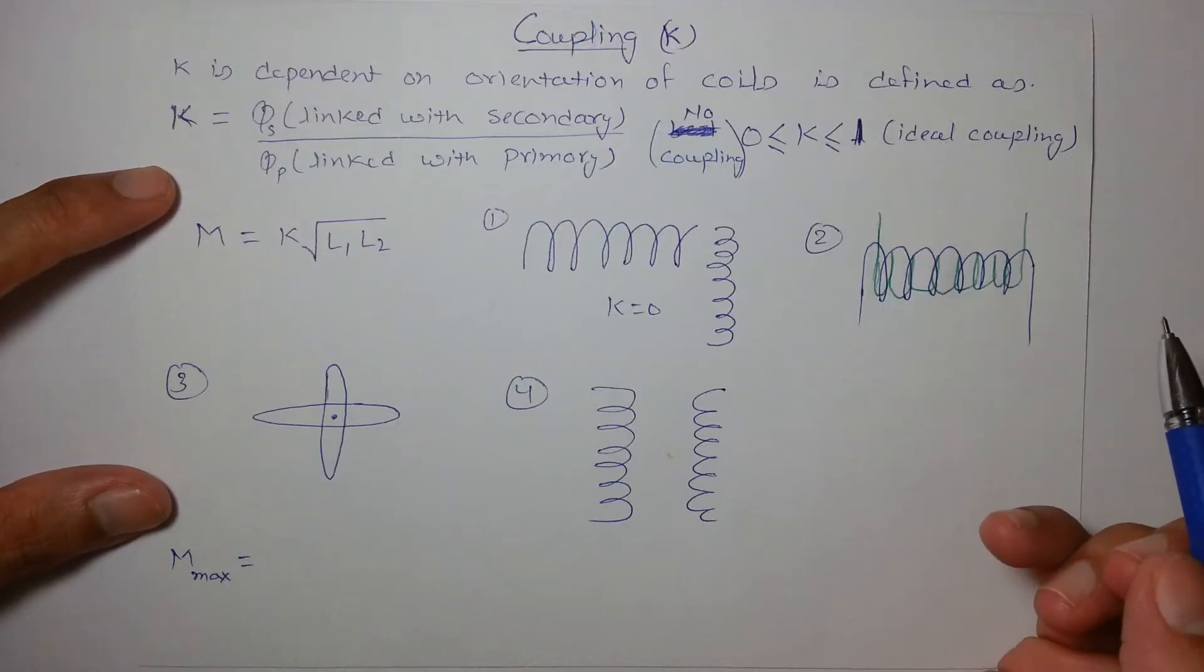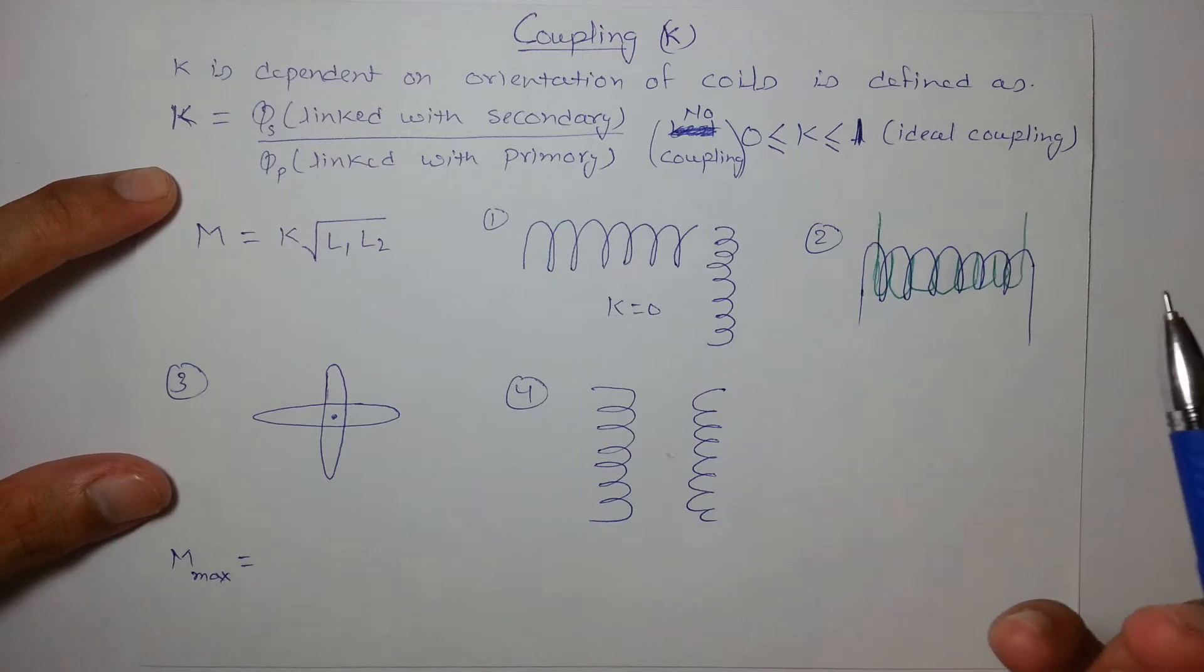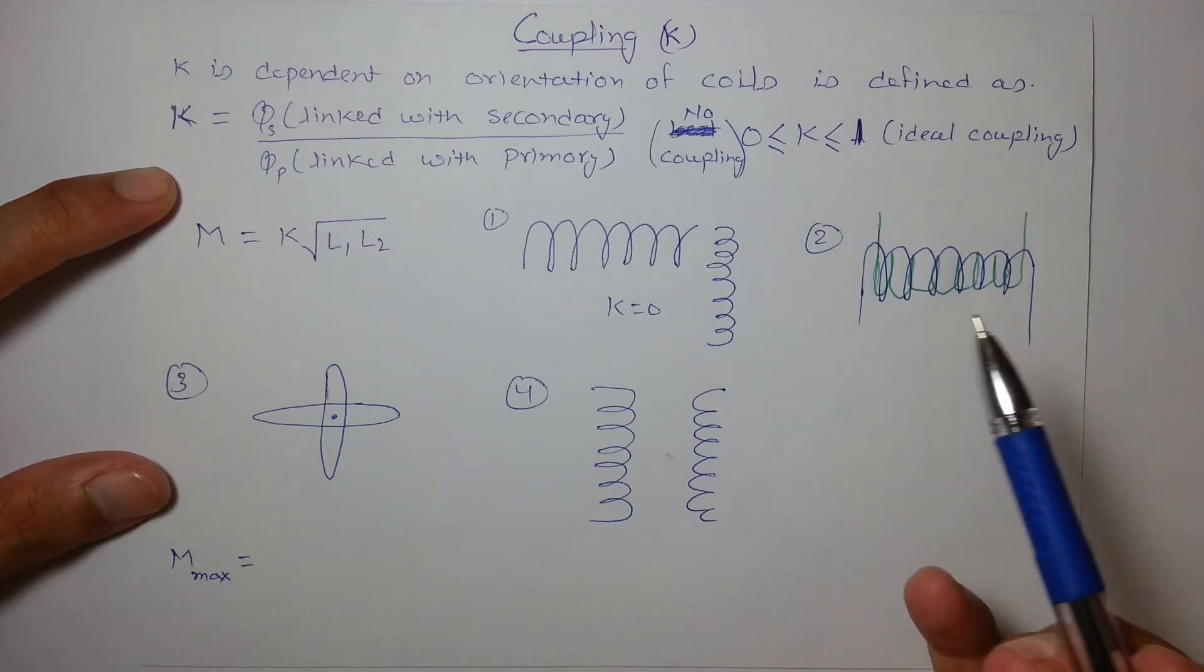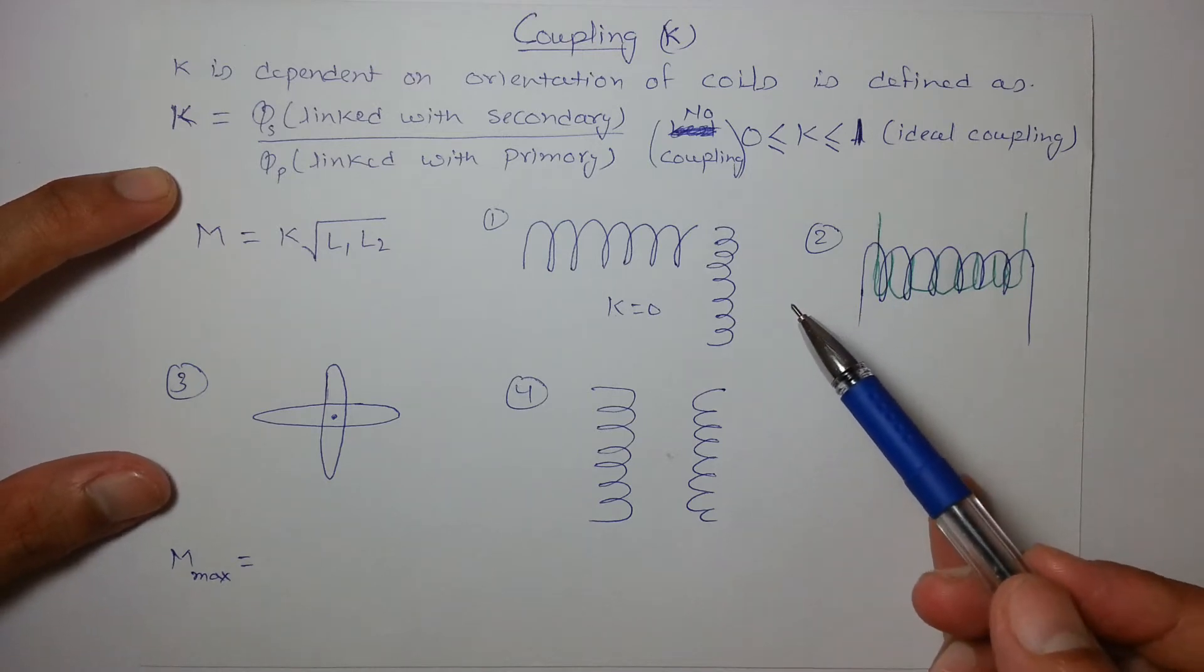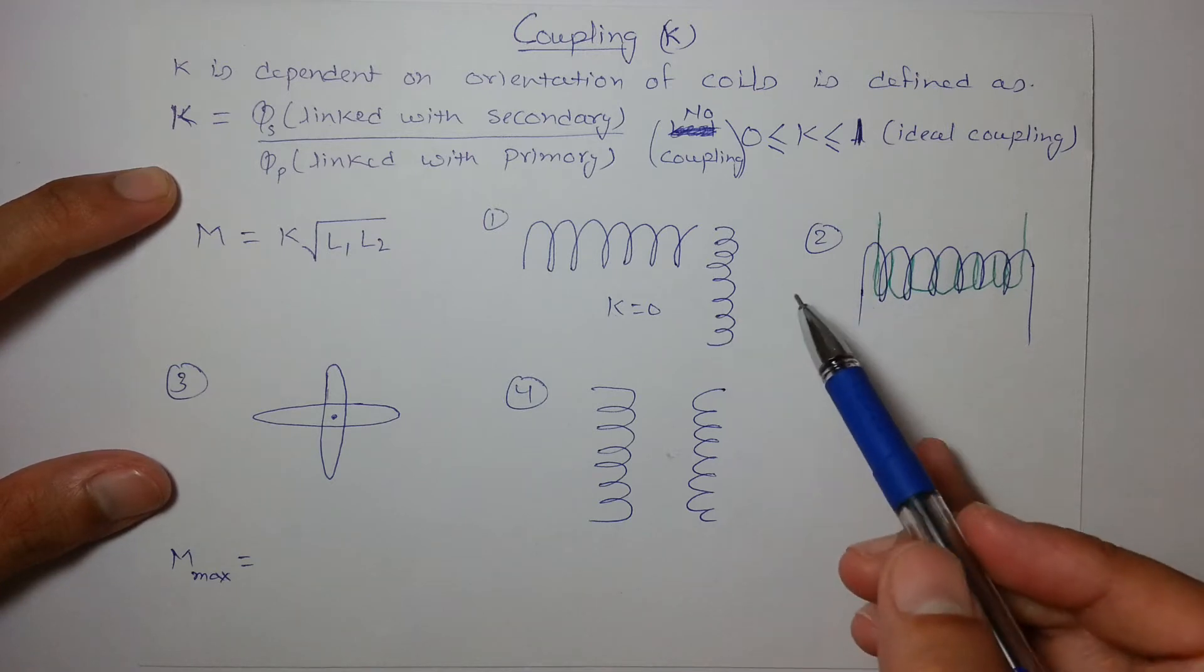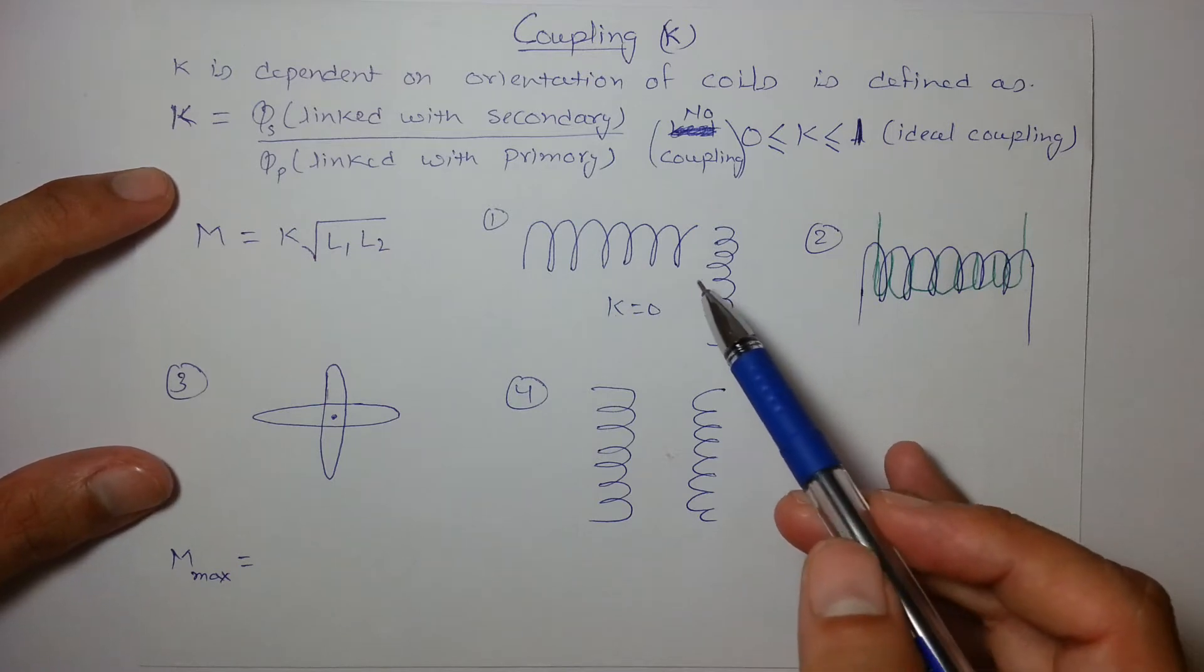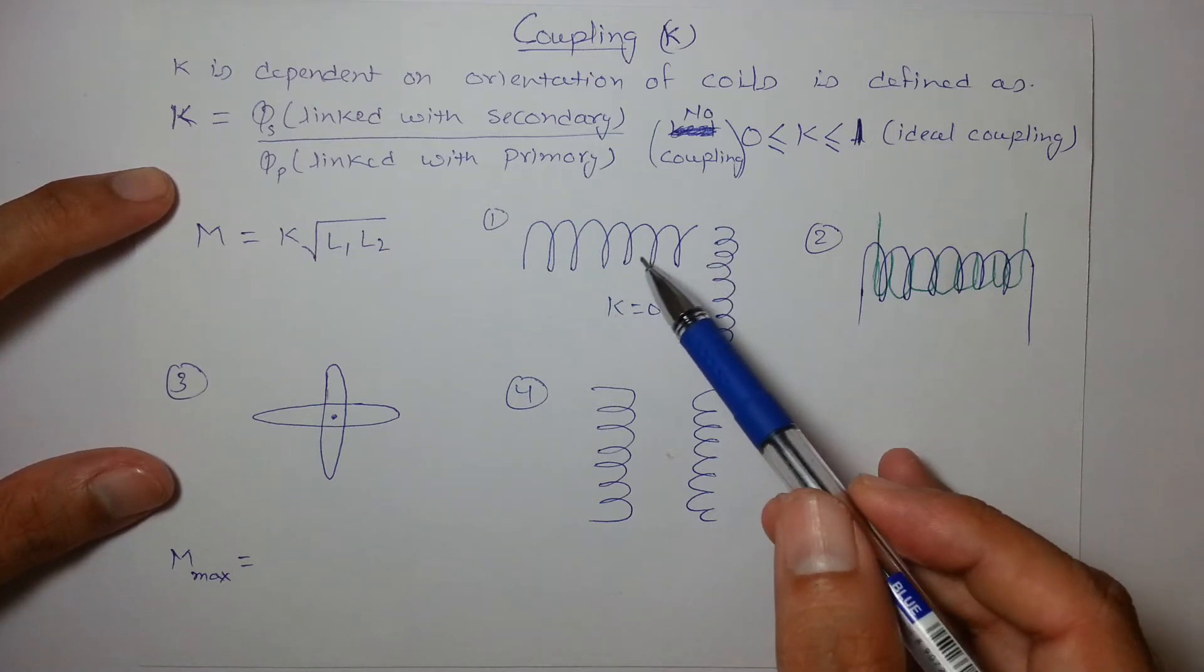Friends, in this video we'll talk about coupling which is dependent on the orientation or spatial arrangement of the coils. How coils are arranged with respect to each other such that flux of one will pass through another coil.